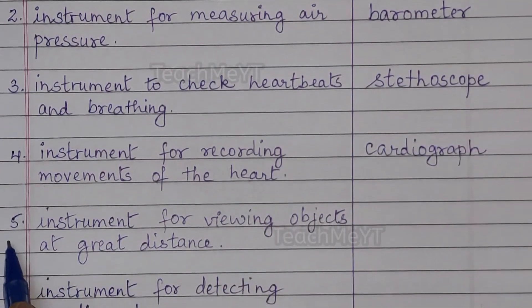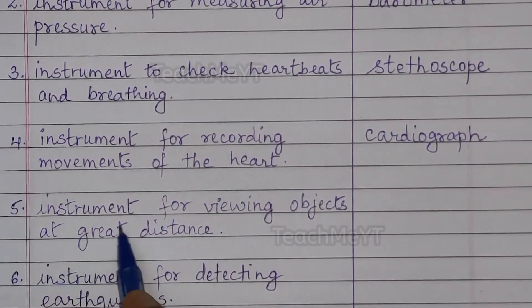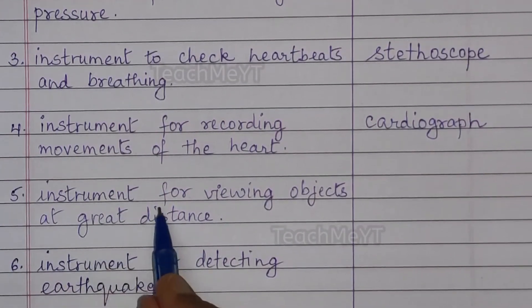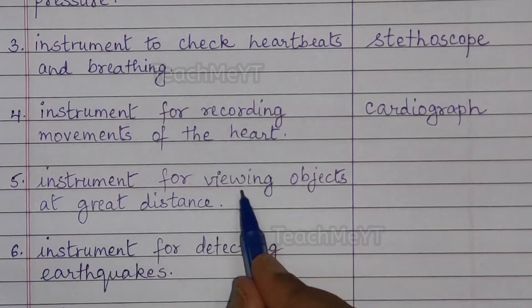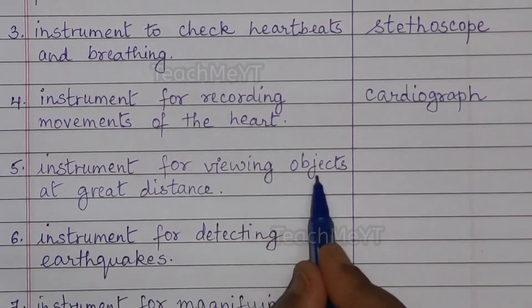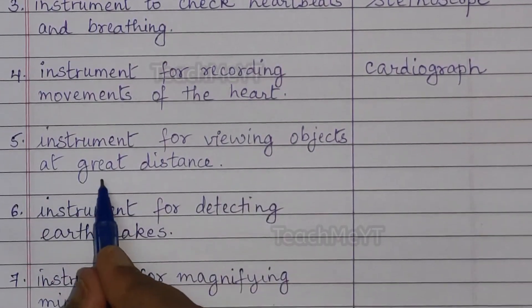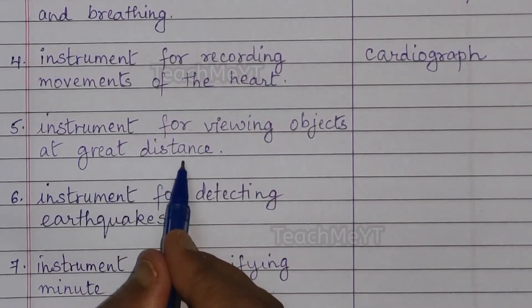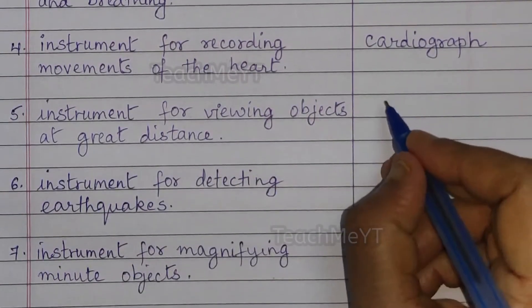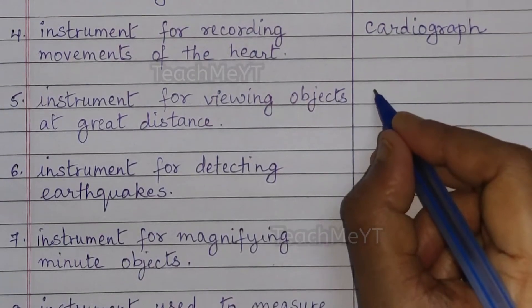Number 5. Instrument for viewing objects at great distance is a telescope.